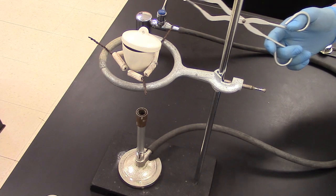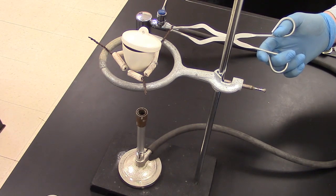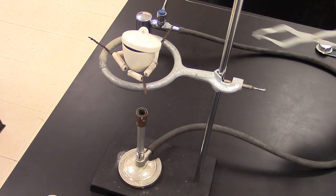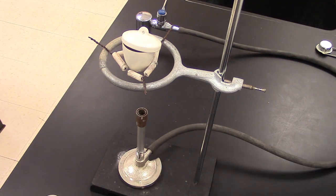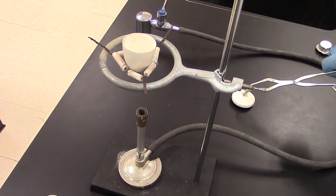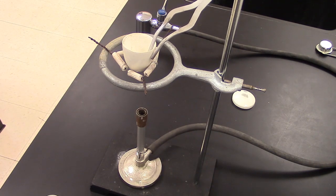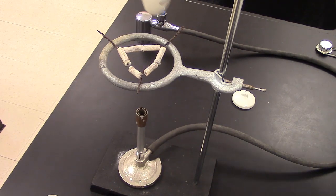When it's time to remove the crucible from the ring stand here, we're going to use our crucible tongs. Do not use your fingers. We're going to gently take our lid off with the crucible tongs and place it off to the side. And then we're going to gently remove the crucible using the crucible tongs and place it off to the side.